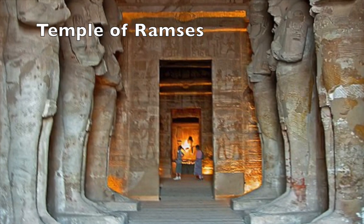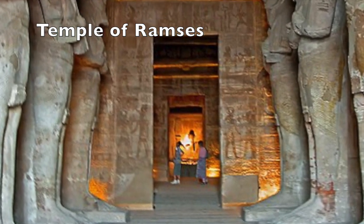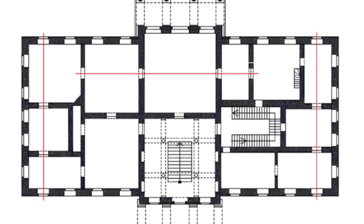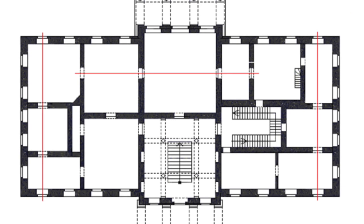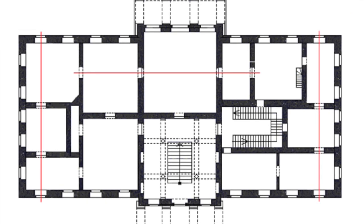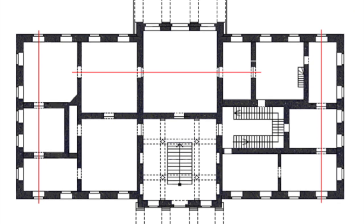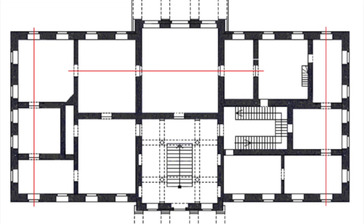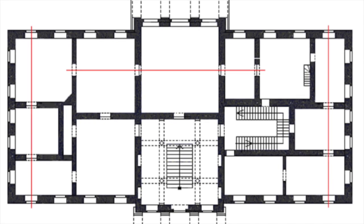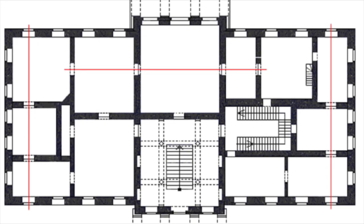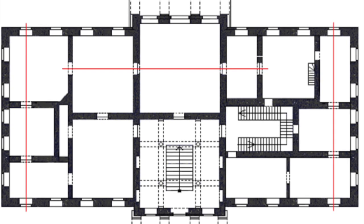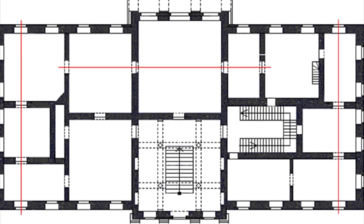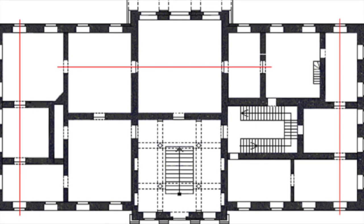Enfilade is not limited to ancient Egyptian architecture, or to any one style. Beaux-Arts architecture is rife with examples, and you can find it in almost any type of architecture. Enfilade is also not limited to one central axis — it can exist within buildings, sometimes multiple times. This palace in the Czech Republic has several examples of doorways arranged on various axes, revealing room after room in dramatic sequence.